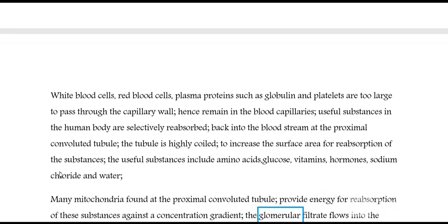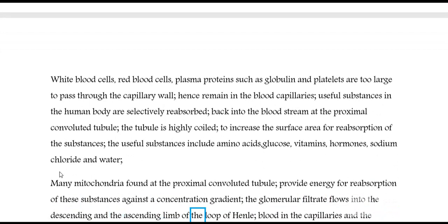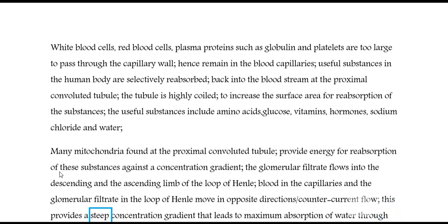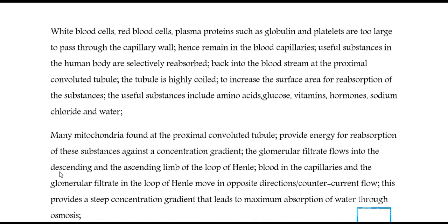The glomerular filtrate flows into the descending and ascending limb of the loop of Henle. Blood in the capillaries and the glomerular filtrate in the loop of Henle move in opposite directions (counter-current flow), providing a steep concentration gradient that leads to maximum absorption of water through osmosis.